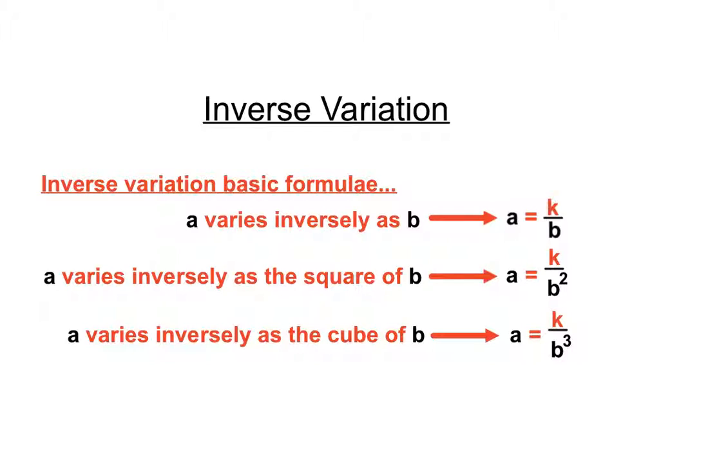The inverse variation basic formula has k on the top instead of k beside the B. The Y version would be Y equals k on X. That's in a lot of questions. There's still going to be squares and cubes you'd have to watch out for, so read the question carefully.